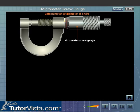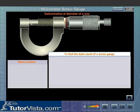Determination of diameter of a wire using a screw gauge. To measure the diameter of a wire with the help of a screw gauge, the following procedure is adopted. Find the least count of the screw gauge.